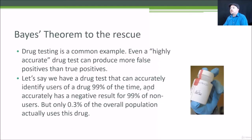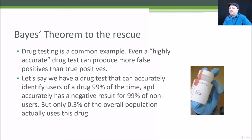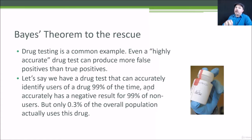A drug test is a common example of applying Bayes' theorem to prove a point. Even a highly accurate drug test can produce more false positives than true positives. In our example, we have a drug test that can accurately identify users 99% of the time, and accurately returns a negative result for 99% of non-users. But only 0.3% of the overall population actually uses the drug in question. So we have a very small probability of actually being a user, and what seems like a very high accuracy of 99% isn't actually high enough.